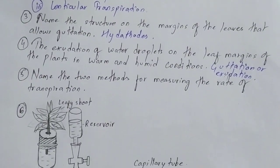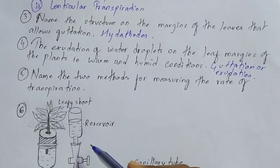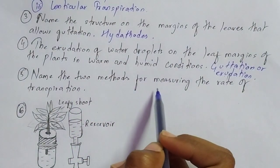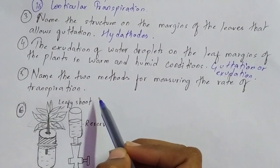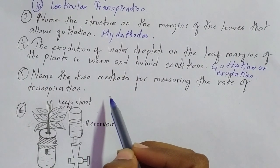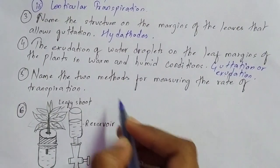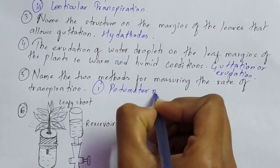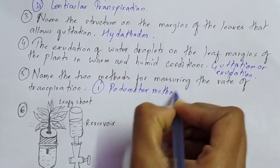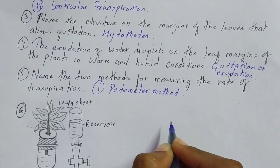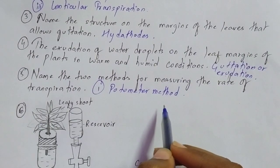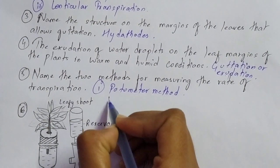Moving on to question number five — we also have a picture-based question which is repeated most of the time from this chapter on transpiration. Question number five: name the two methods used for measuring the rate of transpiration. One is the potometer method. The other method for measuring the rate of transpiration — you are going to write to us in the comment section.